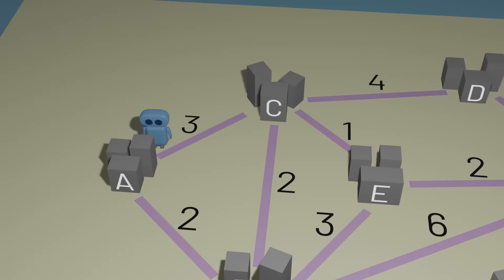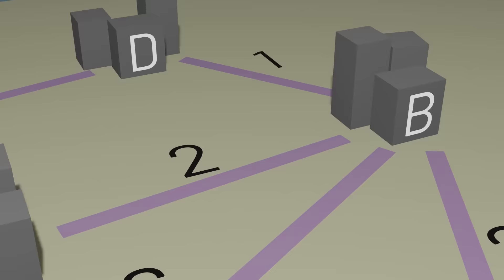And with this graph, we'd like to determine the shortest path from one vertex to another. So, how does Dijkstra's algorithm allow us to do this?